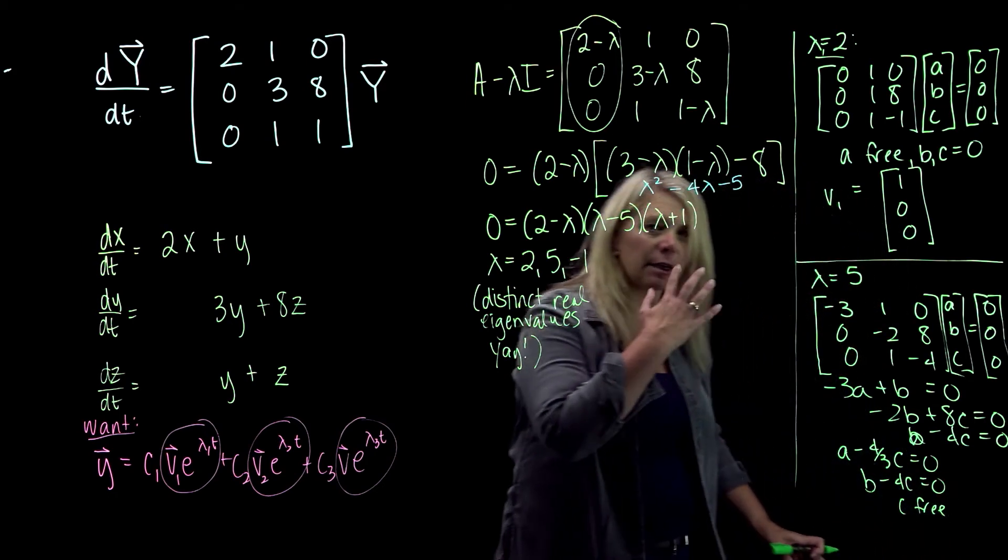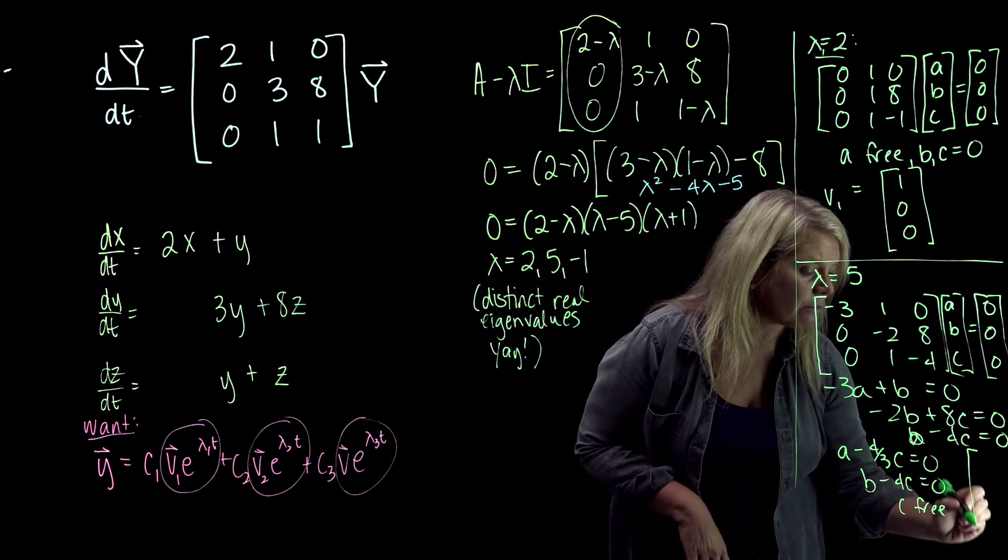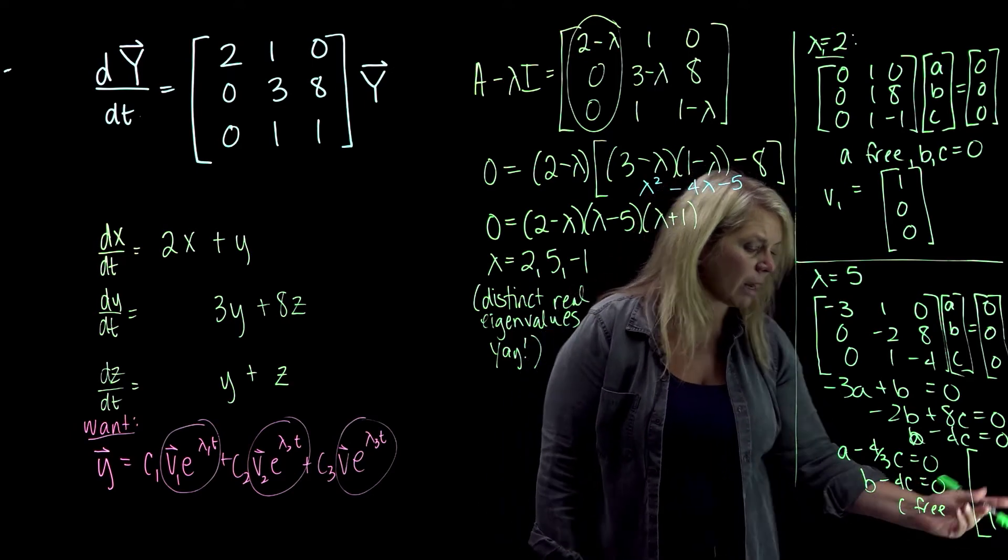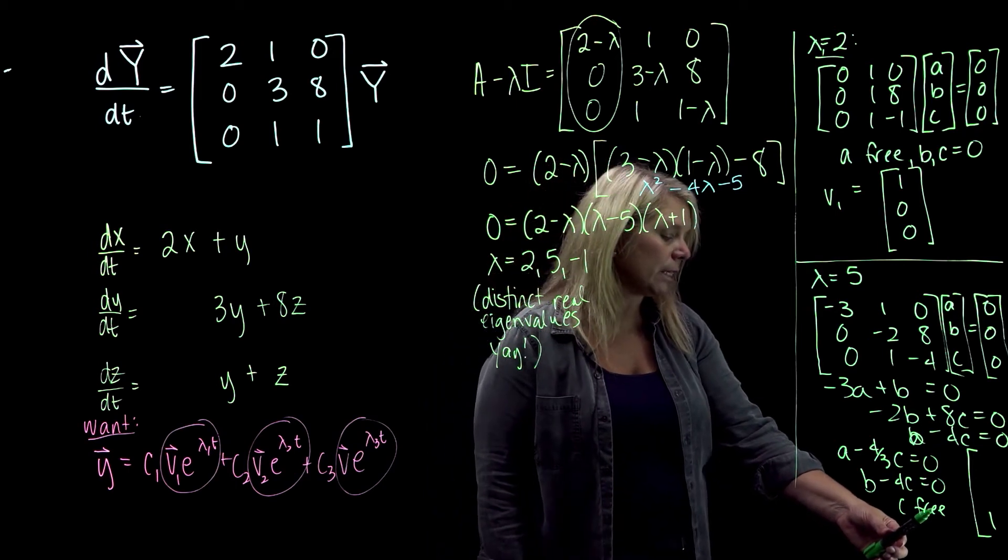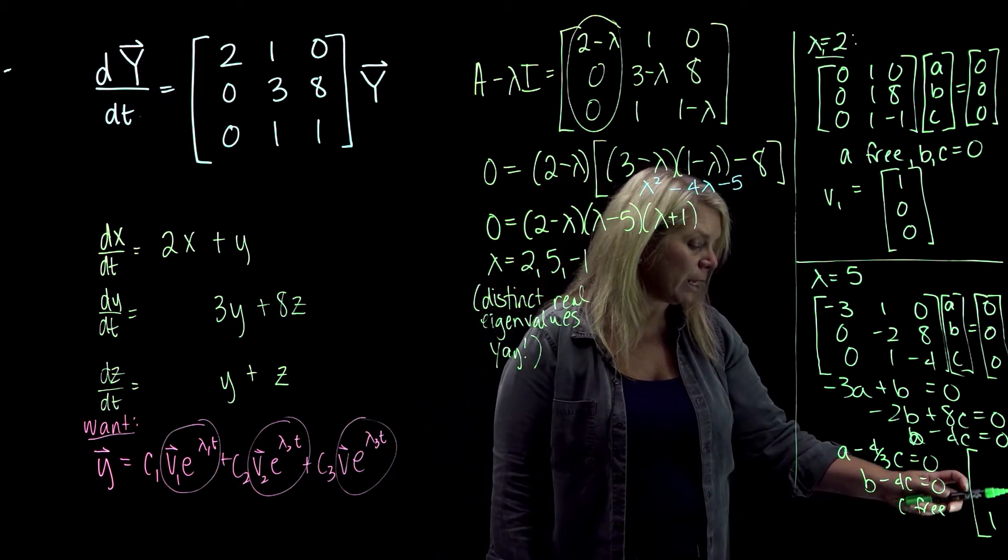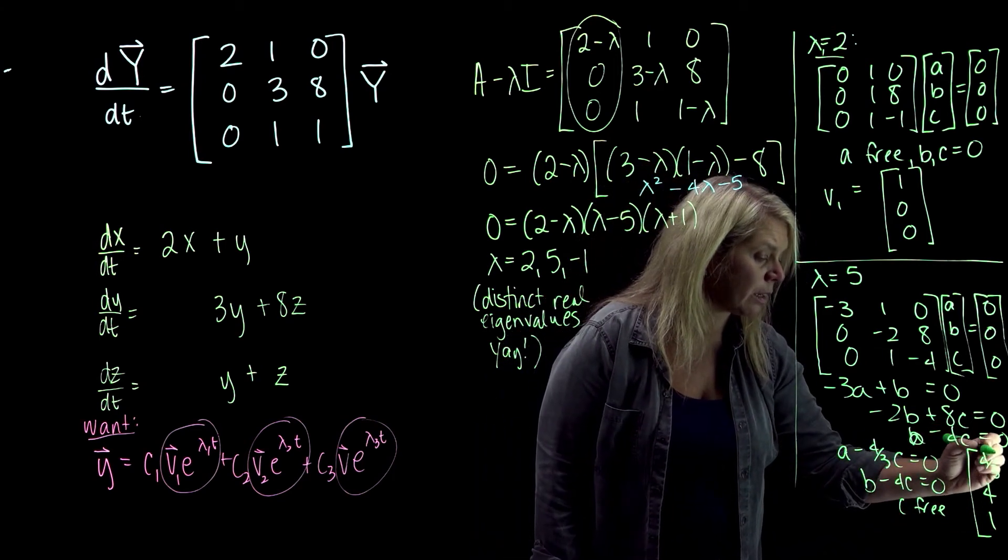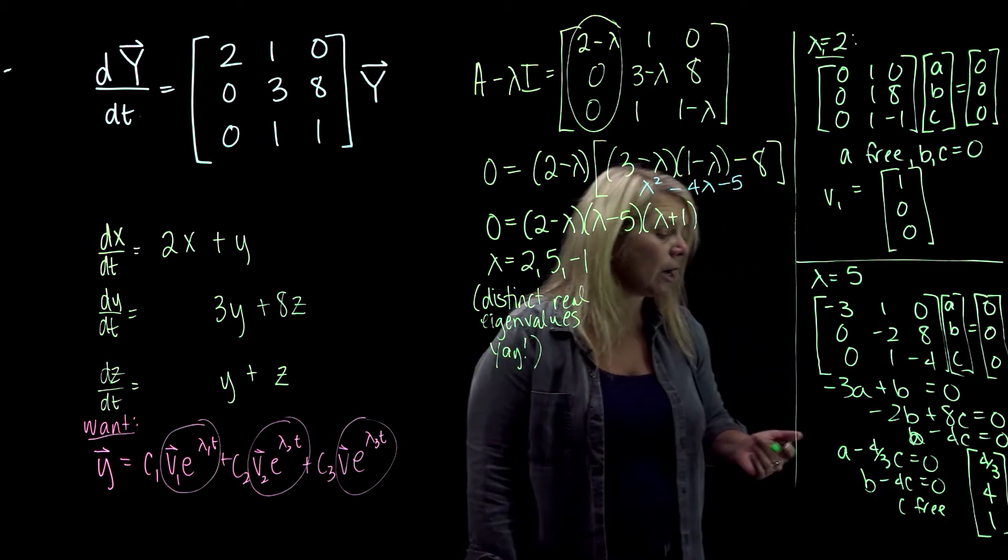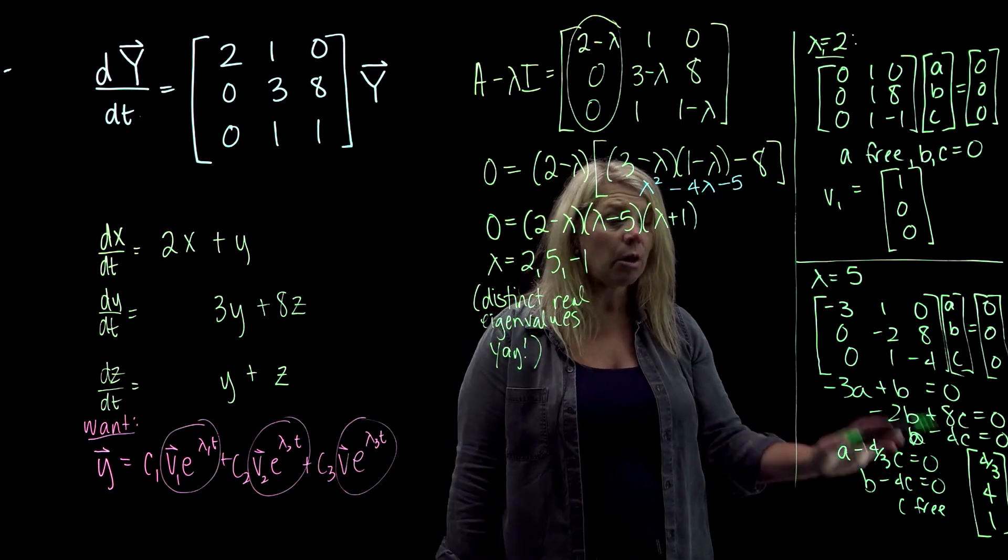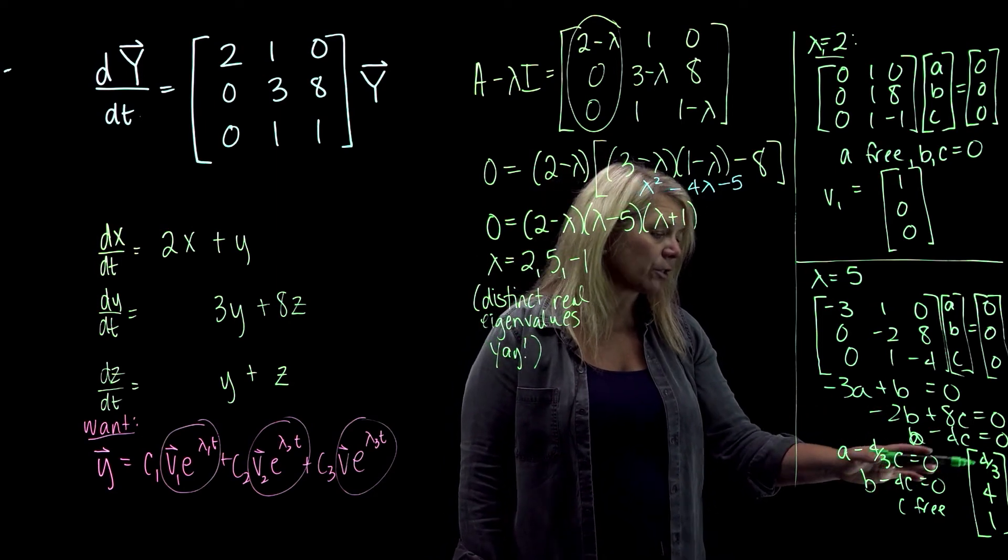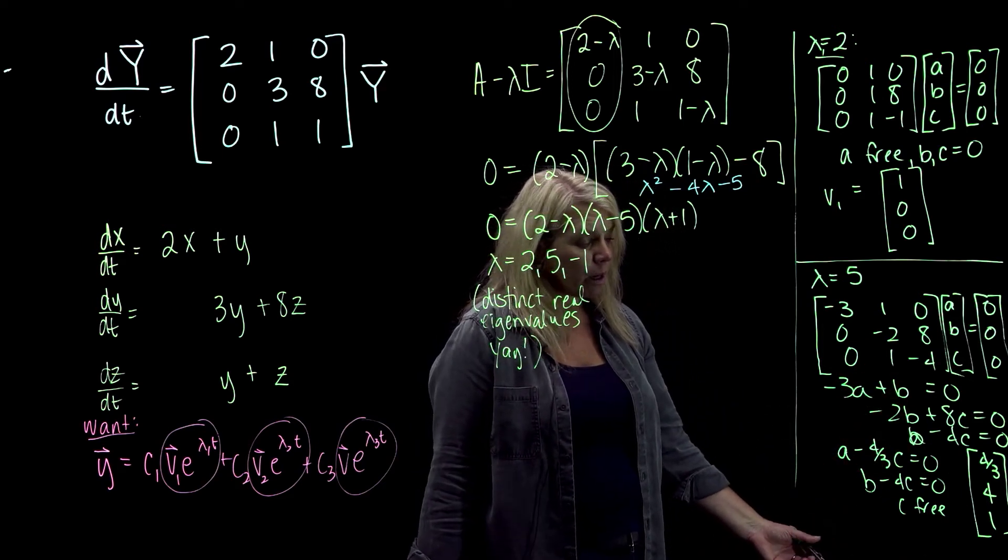Alright, so you want to write down a vector that satisfies that system of equations. So there's a lot of ones you could use. If C is free, I might let C be 1. I don't want the zero vector that satisfies this. But if C is free, I might let C be 1, and then B is going to have to be 4, and then A would be 4/3. Our textbook and the online homework, if you look at what their solutions are, they would not use a vector like this. They would use a scalar multiple of this vector so that we don't have fractions for the entries here. Any non-zero multiple of this vector would work for that though.